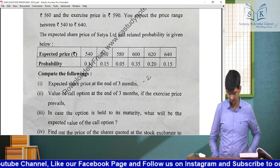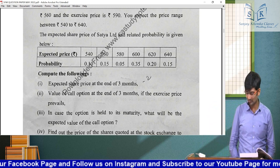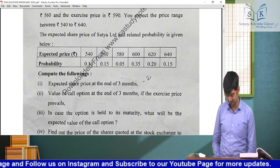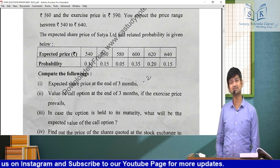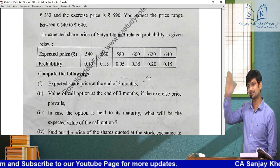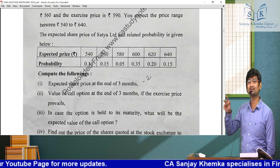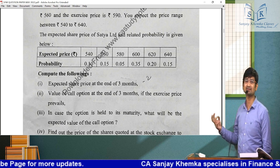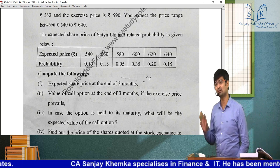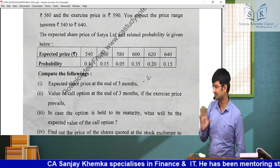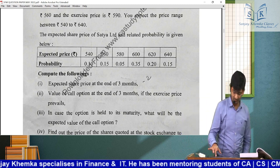Part 2's option value was nil. In part 3, you had to find the value of the option if held to maturity — normal expected value: multiply payoff by probability and solve. Let's say the value came to, say, ₹10 as a random example.